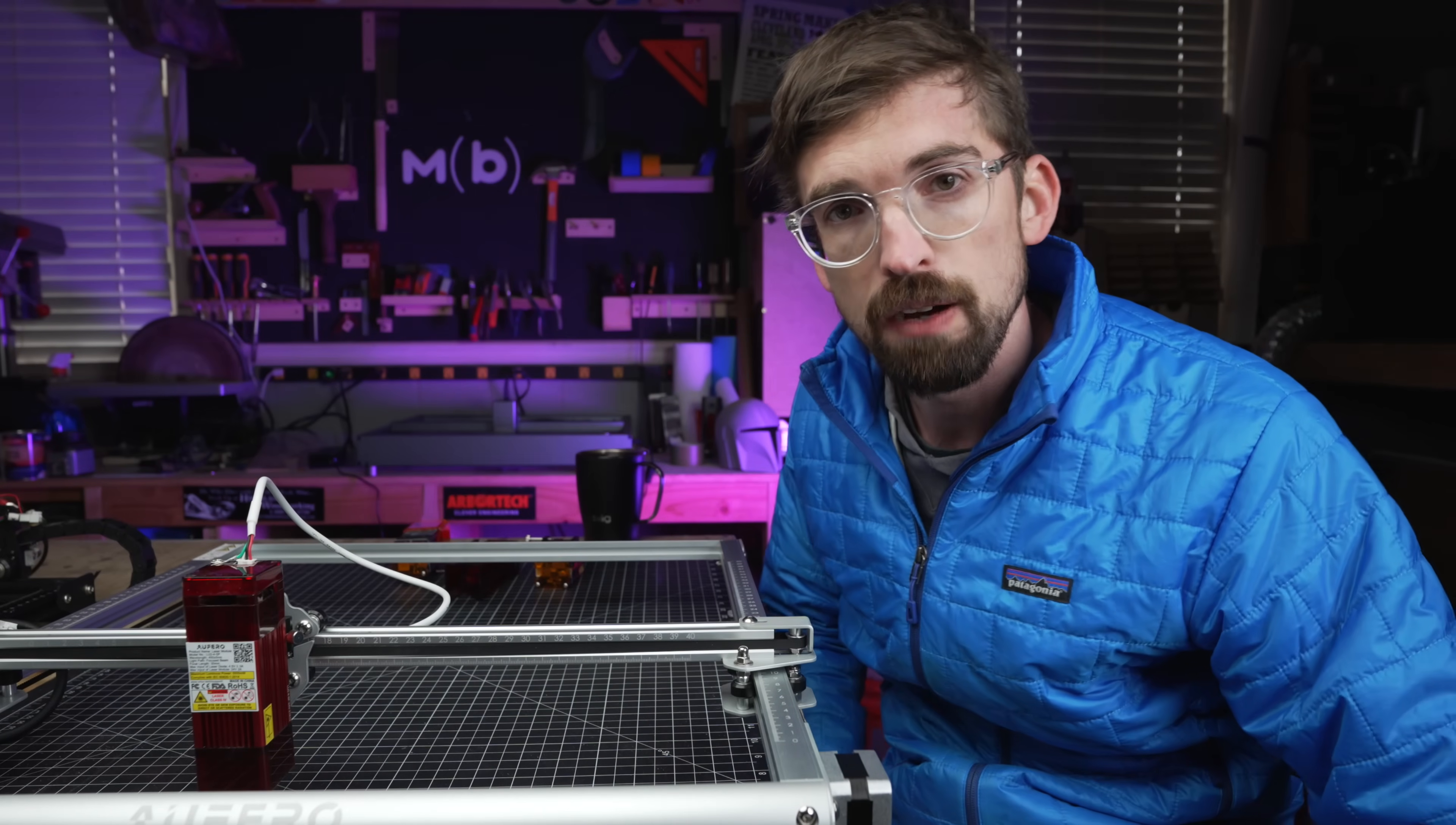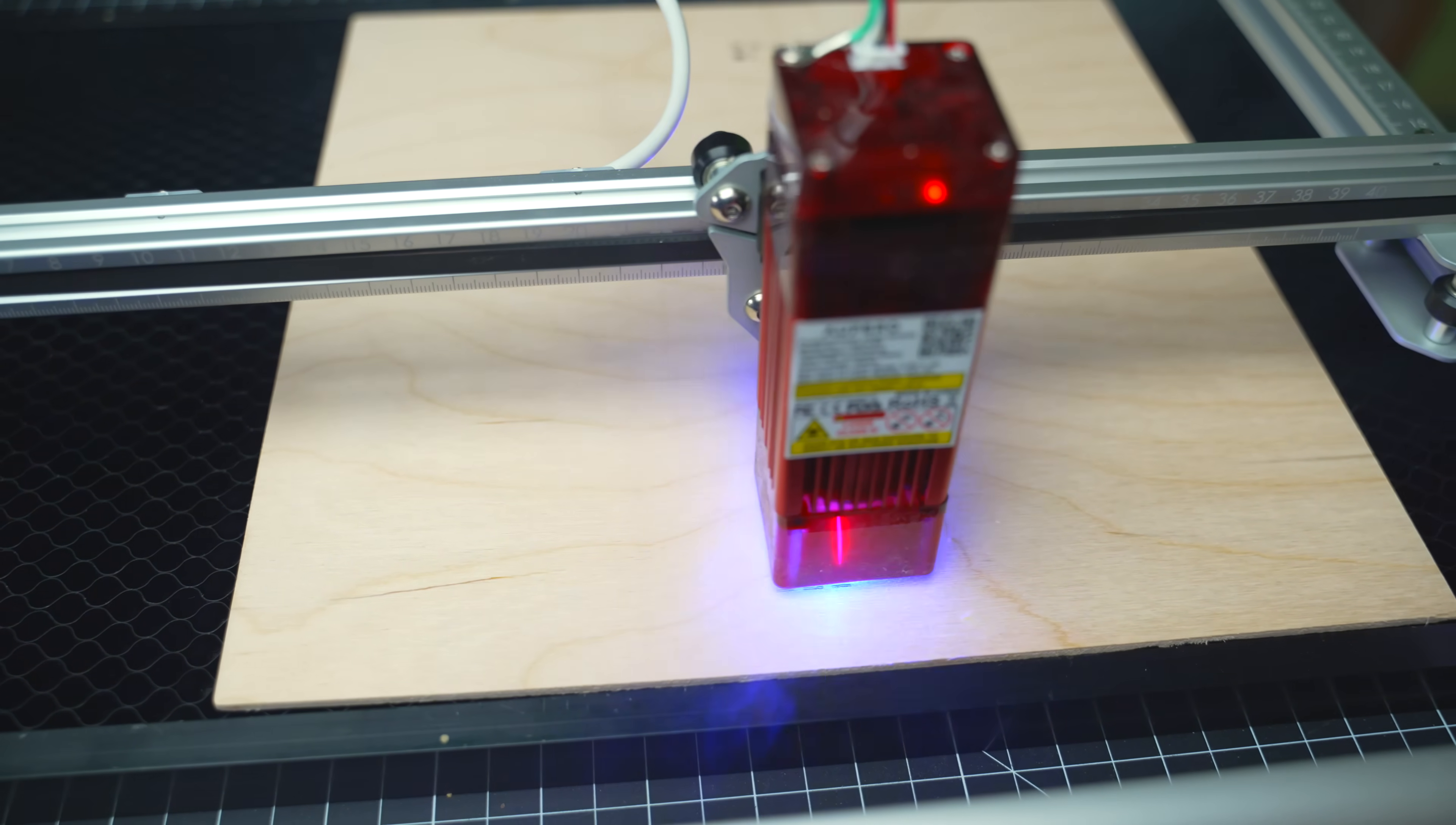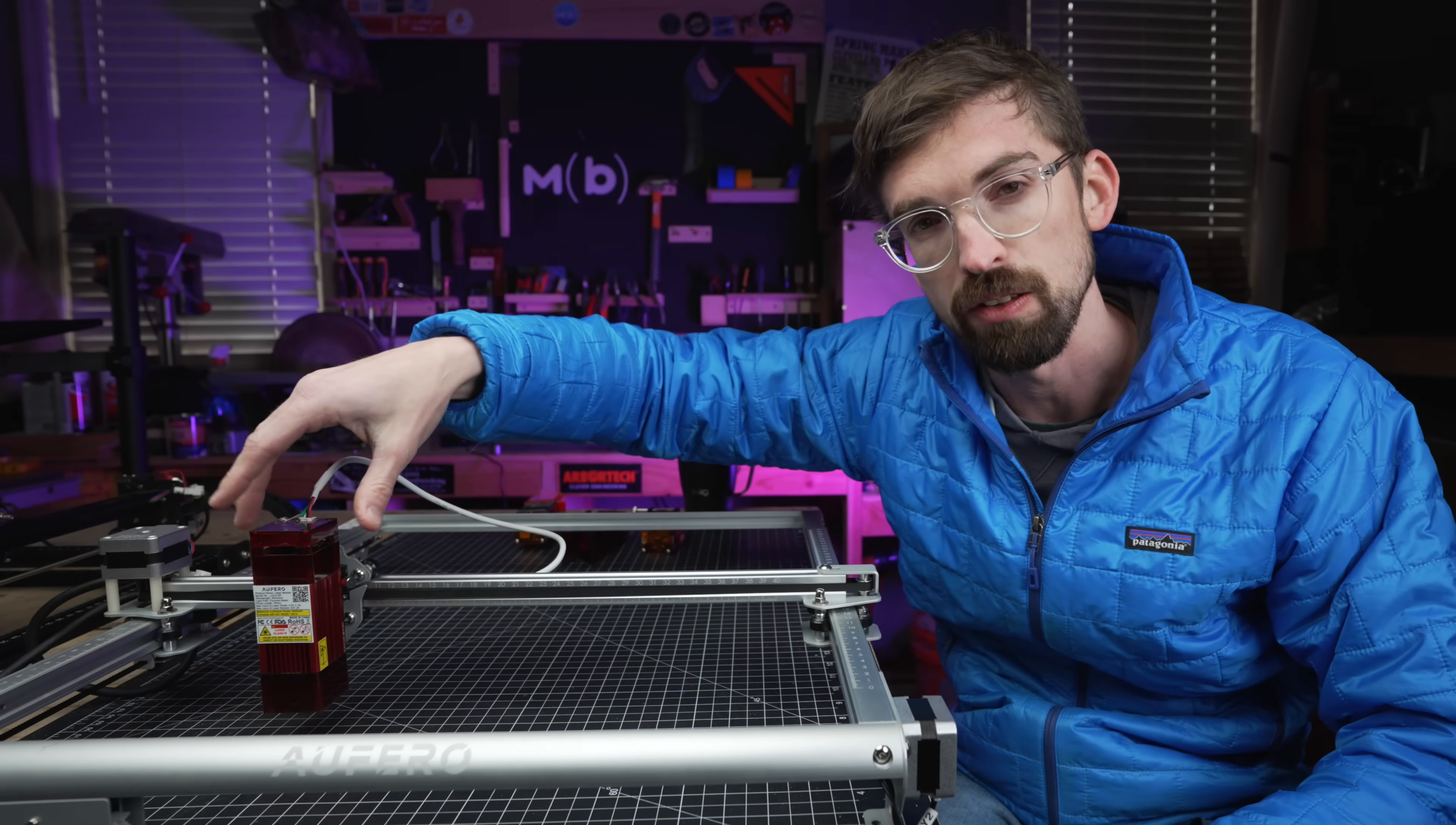But that is also kind of the drawback of this machine in that it doesn't have limit switches. And all limit switches do is they let you know when the machine is at the end. This machine does not have that, meaning that you're not going to be able to home your machine inside of the software. So it's not going to know the zero zero position. So you're always going to have to work with relative coordinates, meaning basically wherever this laser module is when you start, that's where it's going to assume that the zero position is on your machine, which is fine.